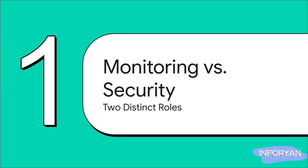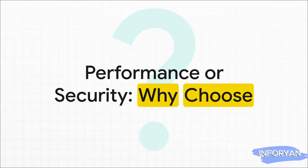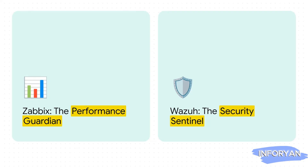Before we get into the weeds, we have to understand the core problem these two tools are trying to solve. In any modern company, the IT environment is massive and complicated, and teams are constantly stuck in a tug-of-war between keeping things running fast and keeping things locked down tight. But what if that's the wrong question? What if you don't actually have to choose? Zabbix is your performance guardian — constantly watching over the health and uptime of your entire infrastructure. Wazuh, on the other hand, is your security sentinel, the guard at the gate looking for threats and making sure you're compliant. They're not rivals; they're specialists, each a master of their craft.